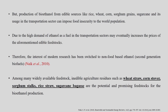The production of bioethanol from edible sources like rice, wheat, corn, sorghum grains, and sugarcane for the transportation sector can impose food insecurity on the world population. These are edible materials, and utilizing them for bioethanol production may eventually increase the price of food-grade materials — a significant negative impact.